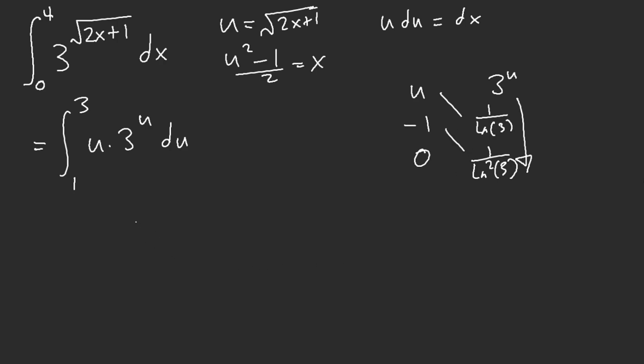Okay? So now we have this. And so now what we have is 3 to the power of u times u over ln of 3 minus 1 over ln squared of 3. And we just plug in from 1 to 3. Okay?